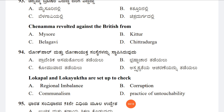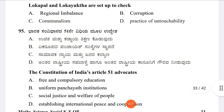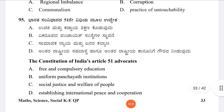Question 94: Lokpal and Lokayukta are set up to check Option A: Regional imbalance, Option B: Corruption, Option C: Criminalism, Option D: Practice of untouchability. The answer is Option B, Corruption.